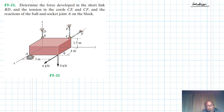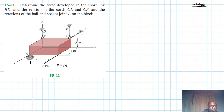First, we are going to draw the free body diagram. This is a 3D rigid body equilibrium problem. In 3D we have six equations of equilibrium: the summation of forces in X, Y, and Z, and the summation of moments in X, Y, and Z. At the ball and socket joint A we have reaction forces Az, Ax, and Ay.